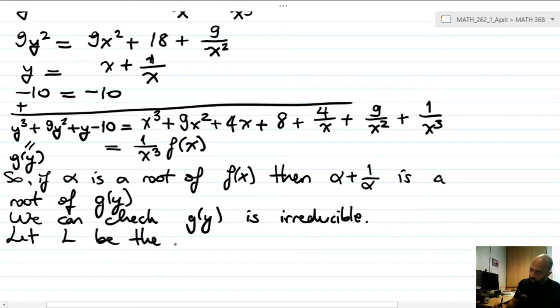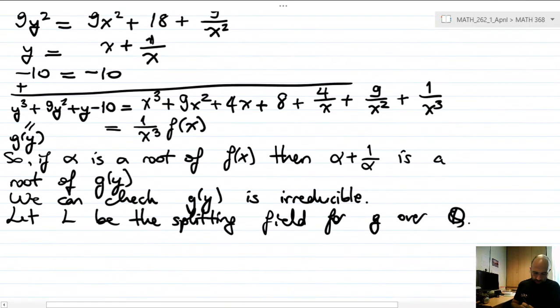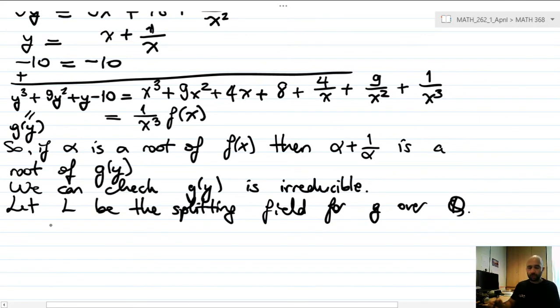Okay. Now let's say L be the splitting field for g over Q over Q again. And K was the splitting field of f. Now clearly if alpha belongs to K, alpha plus one over alpha also belongs to K. Therefore we have this tower of fields, right? K contains L and that contains Q.